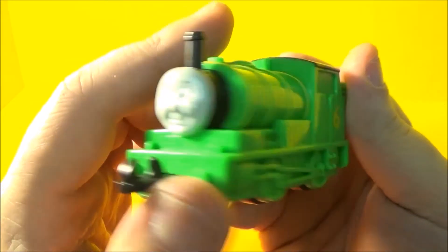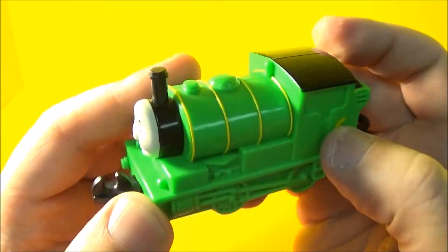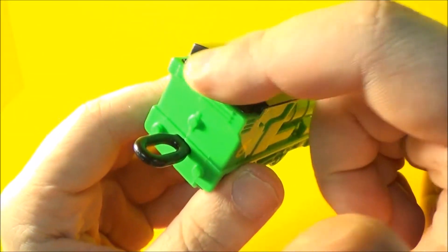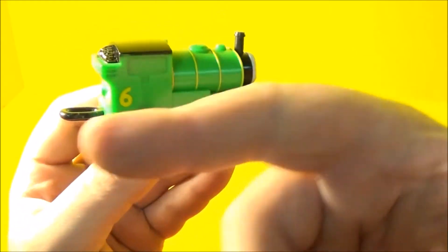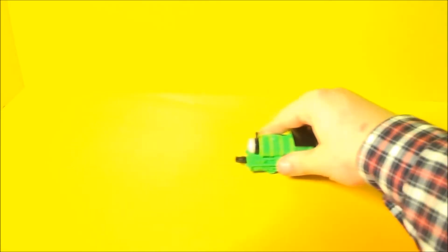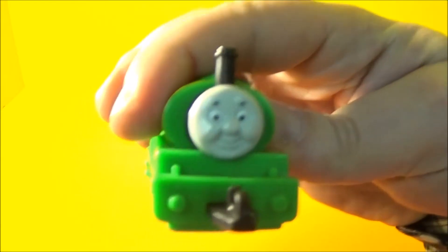Next up we have Percy. Got a nice number six on the side there. Nice soft green color, I like that. See where his coal is here. Again, connector on the front and the back. He's got his wheels down here. And when you push him along, he's got a clicking sound. There you go. There's Percy.